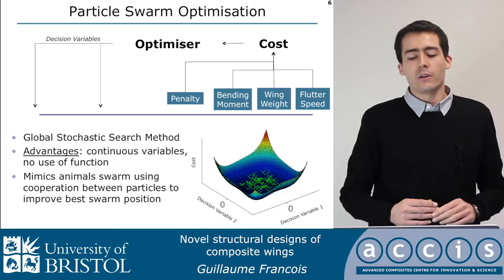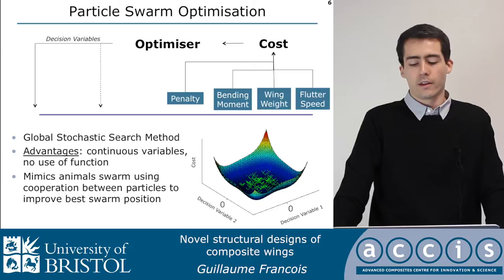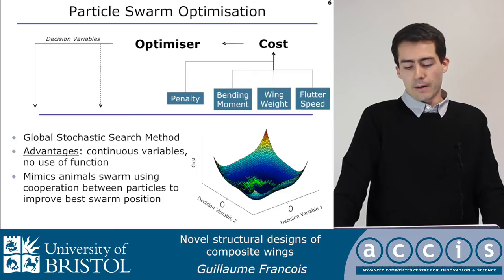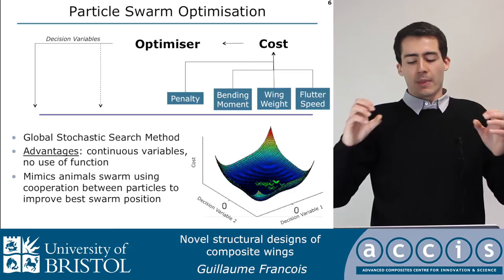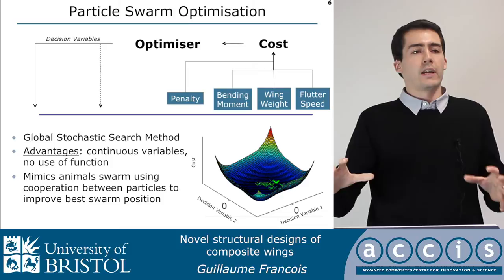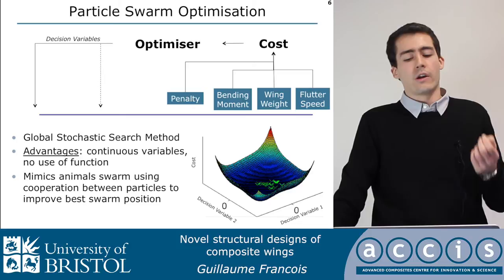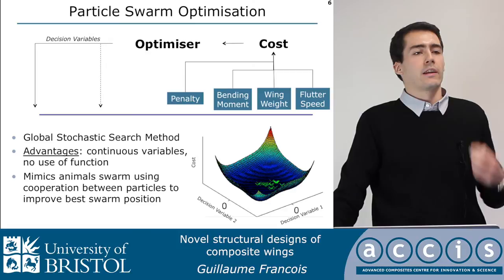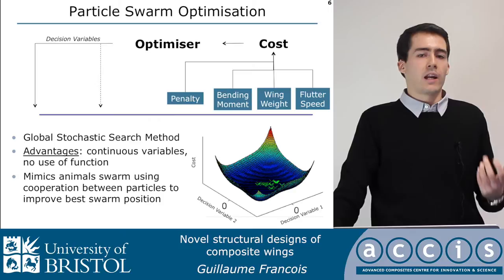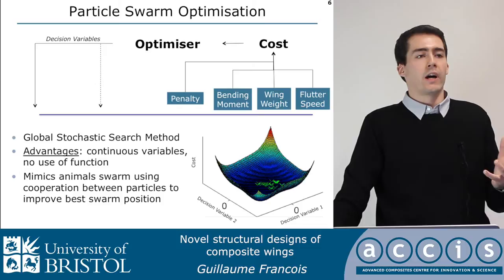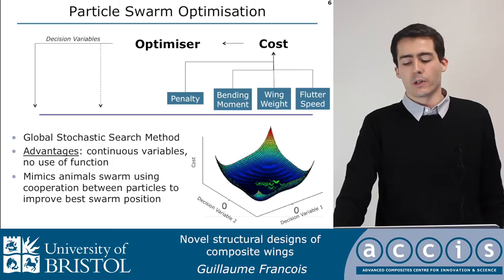We use something called particle swarm optimization, which is a global stochastic search method. As shown in the bottom right graph, it creates a swarm of particles representing different trial solutions, and then finds a global minimum. A key advantage is that it does not require a function — it only requires you to generate a solution and then evaluate it. Particle swarm optimization is based on animal behaviors, such as how birds in a swarm move to find better wind currents or food sources.